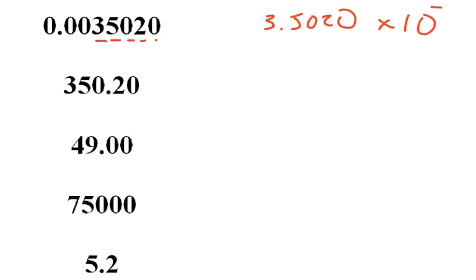And I can see it's 1, 2, 3 places off from where the 3.5 is here. It moved 3 times. So that's my answer, 3.5020 times 10 to the minus 3.